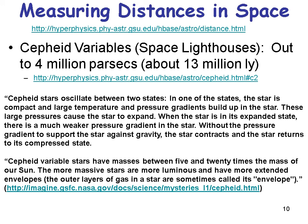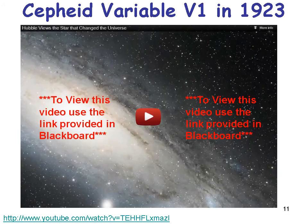I'm glad that God gave us our sun and not one of these, because we would not be able to live close to one of them. Here's a video to watch about cepheid variable V1 and how it was used in 1923 to understand more about these objects in space.